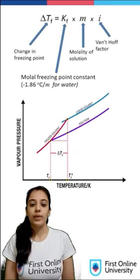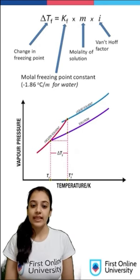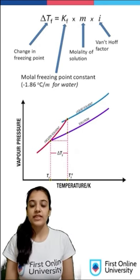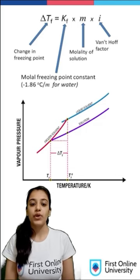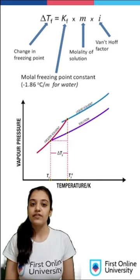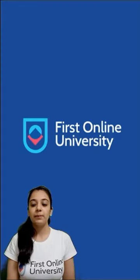If we plot a graph of vapour pressure versus temperature, we see that delta Tf is nothing but the difference in temperature between the freezing point of the pure solvent and the freezing point of the solution, which decreases on adding the solute, whose vapour pressure decreases as studied in the first colligative property.